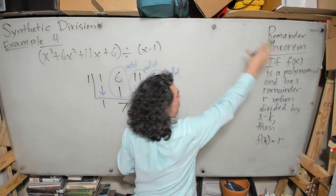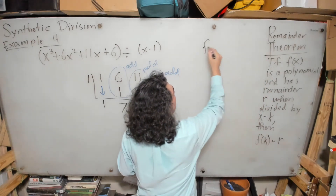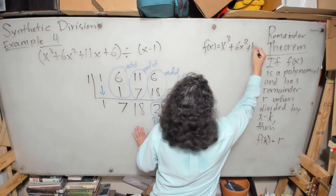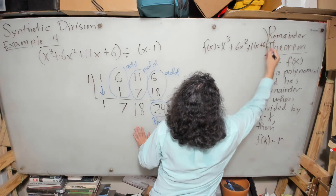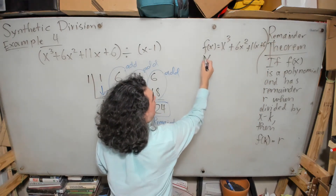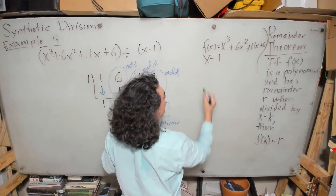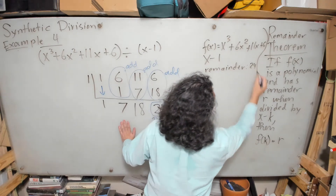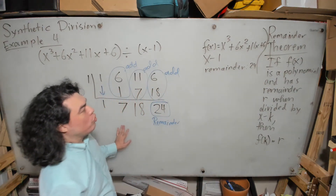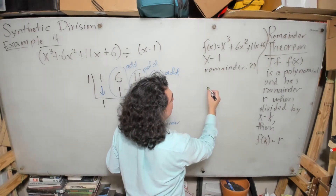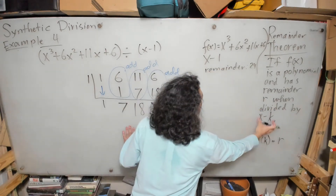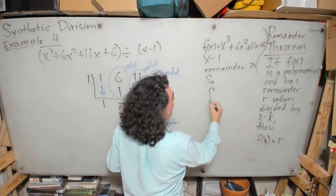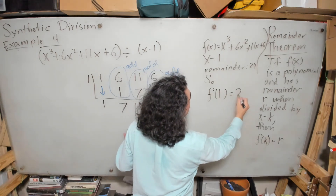So f of x equals x cubed plus 6x squared plus 11x plus 6, divided by x minus 1, with remainder 24. Our k is going to be 1 because comparing x minus 1 to x minus k, k must equal 1. So by the remainder theorem, f of 1 equals 24.